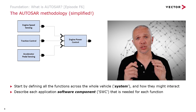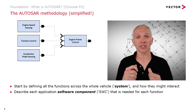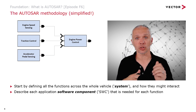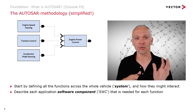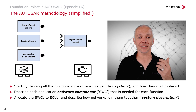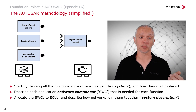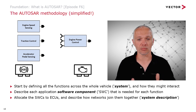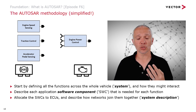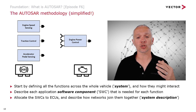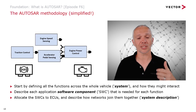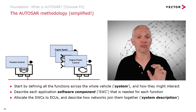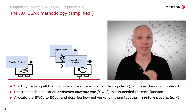We then have to describe each software component needed for each function. It's very unusual for there to be a one-to-one relationship — there'll usually be many software components within an individual function, and of course many more than four functions in a real vehicle. We then take these software components and allocate them to the ECUs we want in the vehicle. There are a number of ways to do this, governed by constraints about where things are located and how we want them to work. Once allocated, we describe how networks join them together — this is called the system description process. We take our software components, allocate them to ECUs, add in the networks, and can then describe all the communication needed to move data from one ECU to another.